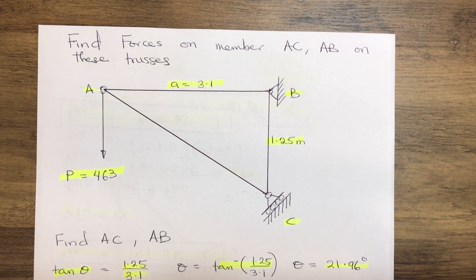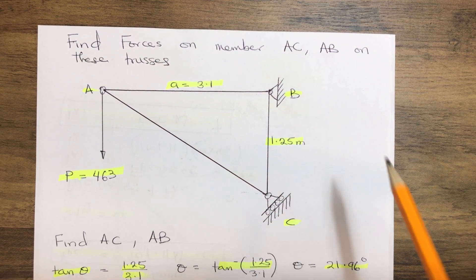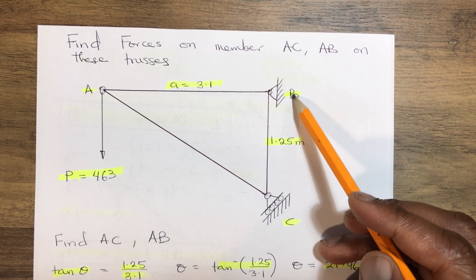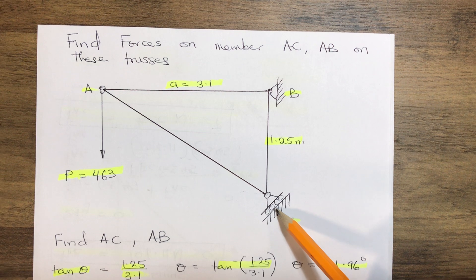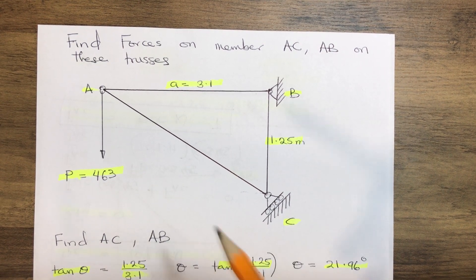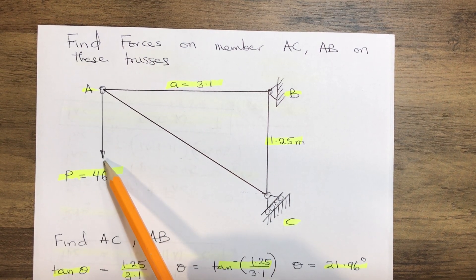Here below we have our truss suspended on a pin joint on B and a roller joint on C. We have a load acting vertically downward.